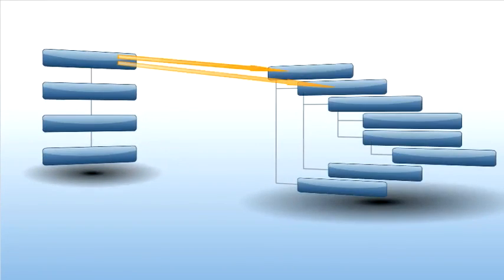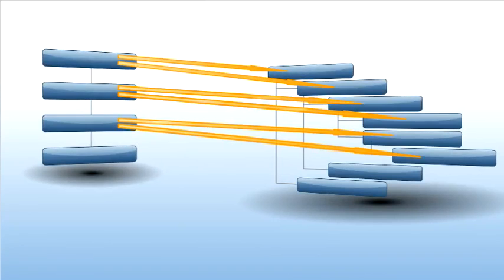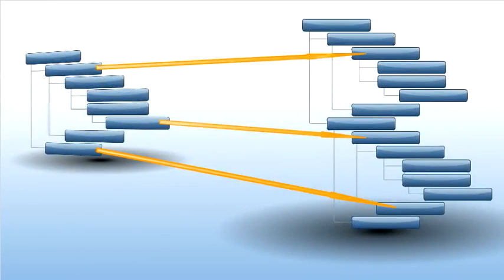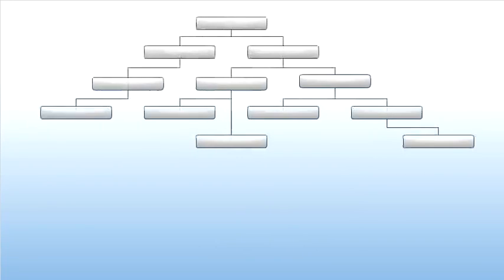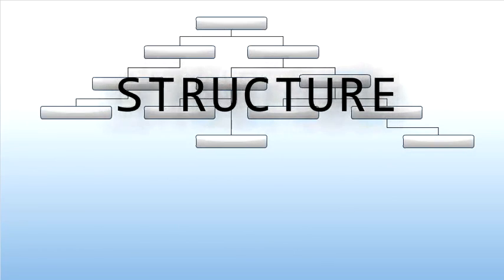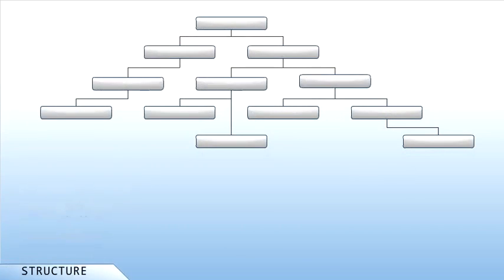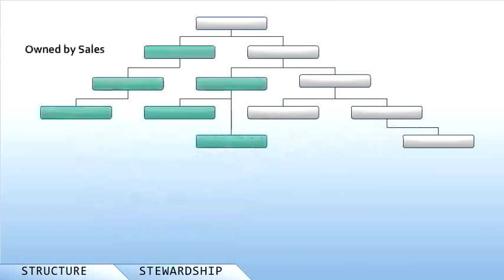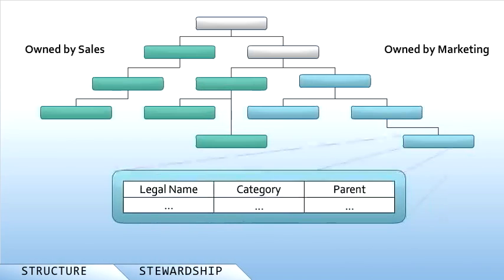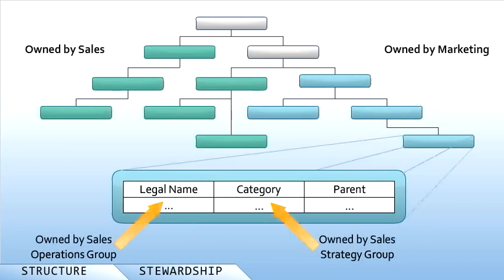Cross-linked hierarchies — imagine mapping two moving parts. The first component of hierarchy management is the creation of the structure, which as we've seen can be simple or complex. The second component is assignment of stewardship, which in itself could be complex.